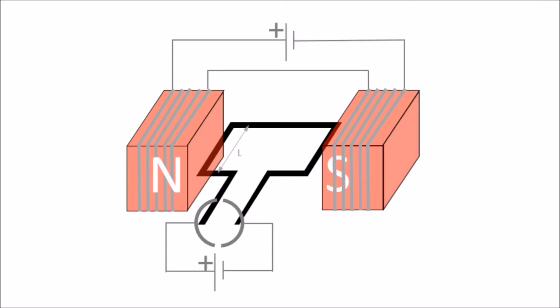In our previous video we looked at how rotational motion is produced in an armature when placed within a magnetic field. In this video we're going to look at more practical examples, because in DC motors the magnetic field is actually produced by an electromagnet. We'll look at two different examples of DC motors where the armature and the field windings share the same circuit.